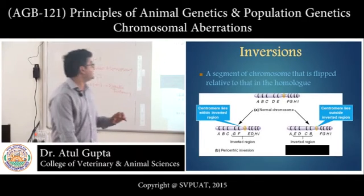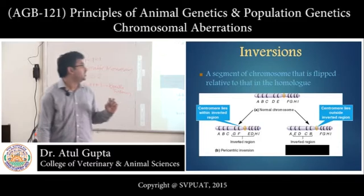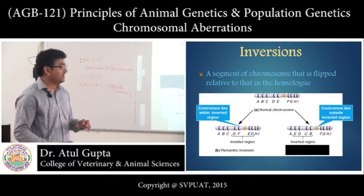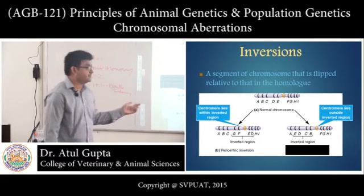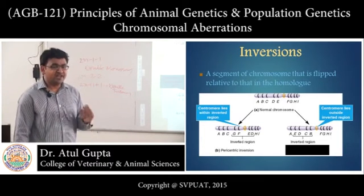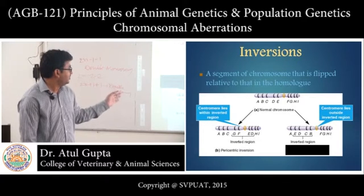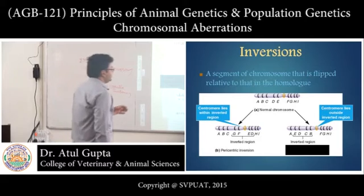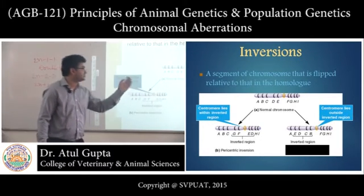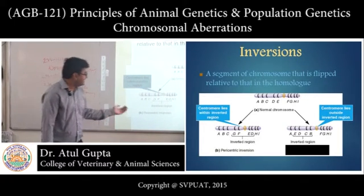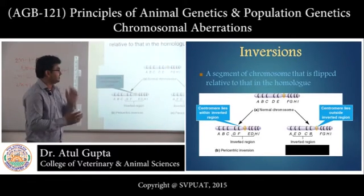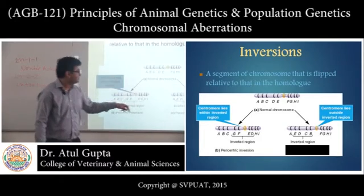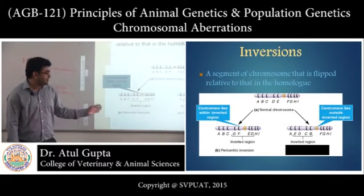Inversion is when a segment of a chromosome is flipped relative to the homolog — that is, a segment is rearranged by 180 degrees. There are two types: pericentric and paracentric. In pericentric inversion, the centromere lies within the inverted region. In paracentric inversion, the centromere is not involved. For a chromosome with sequence a b c d e f g h i, in pericentric inversion the d e f g portion is reverted, giving the new sequence a b c g f e d h i.